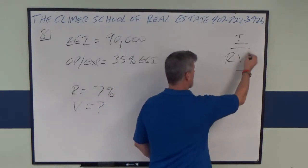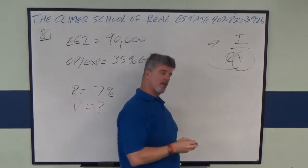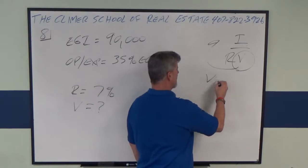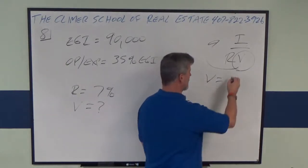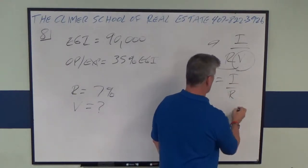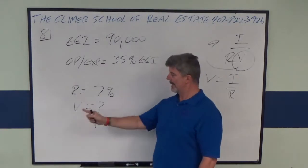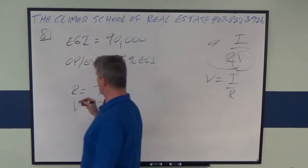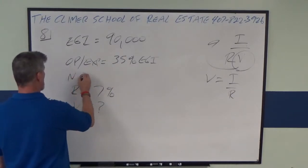So again, here's what I teach. Tie that to a rope, swing it over the other side of that bridge or that river or that canyon. V's all by itself. What's left with you? I over R. Okay, they gave us R. We have to solve for NOI.